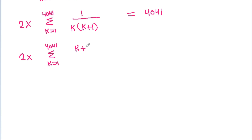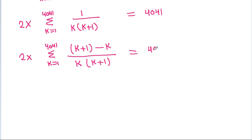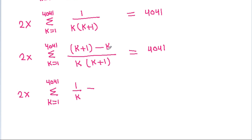And we write 1 by k times k plus 1 as k plus 1 minus k, all over k times k plus 1, which equals 1 by k minus 1 by k plus 1. So we have 2x times the summation from k equal to 1 to 4041 of 1 by k minus 1 by k plus 1, equal to 4041.